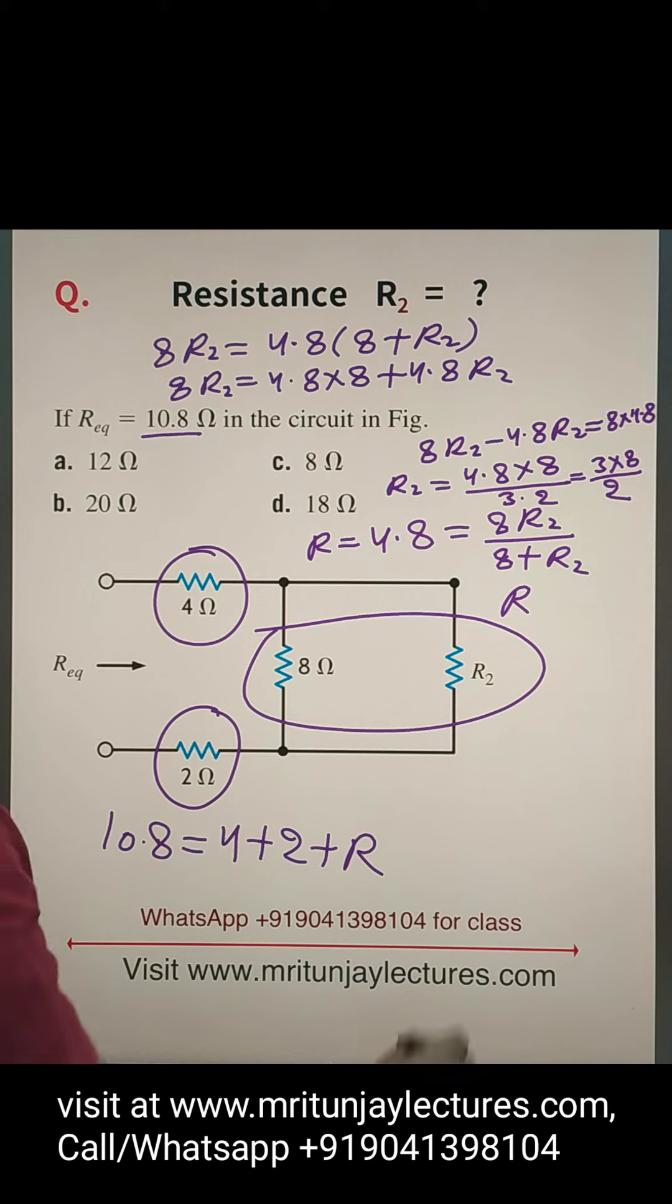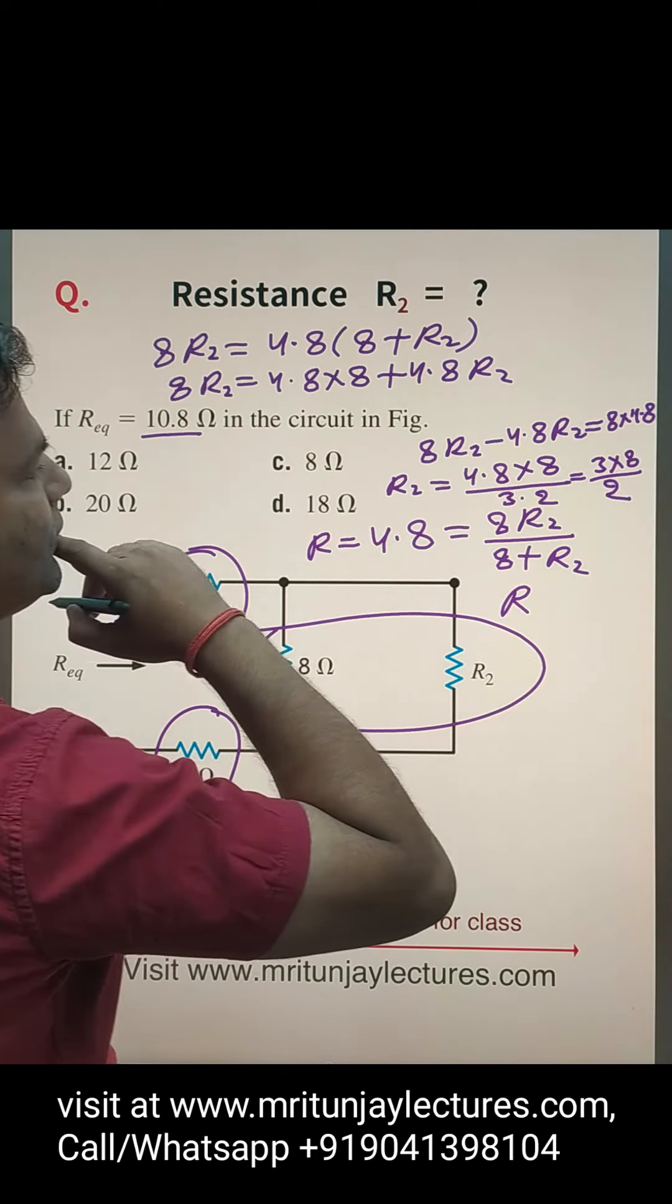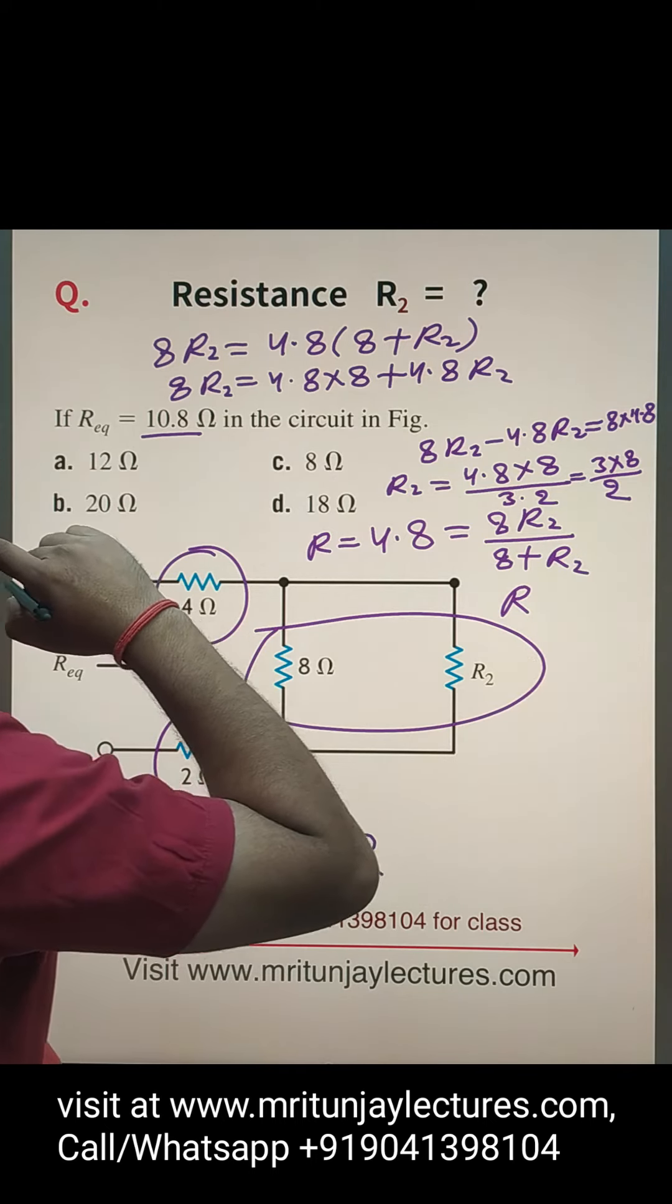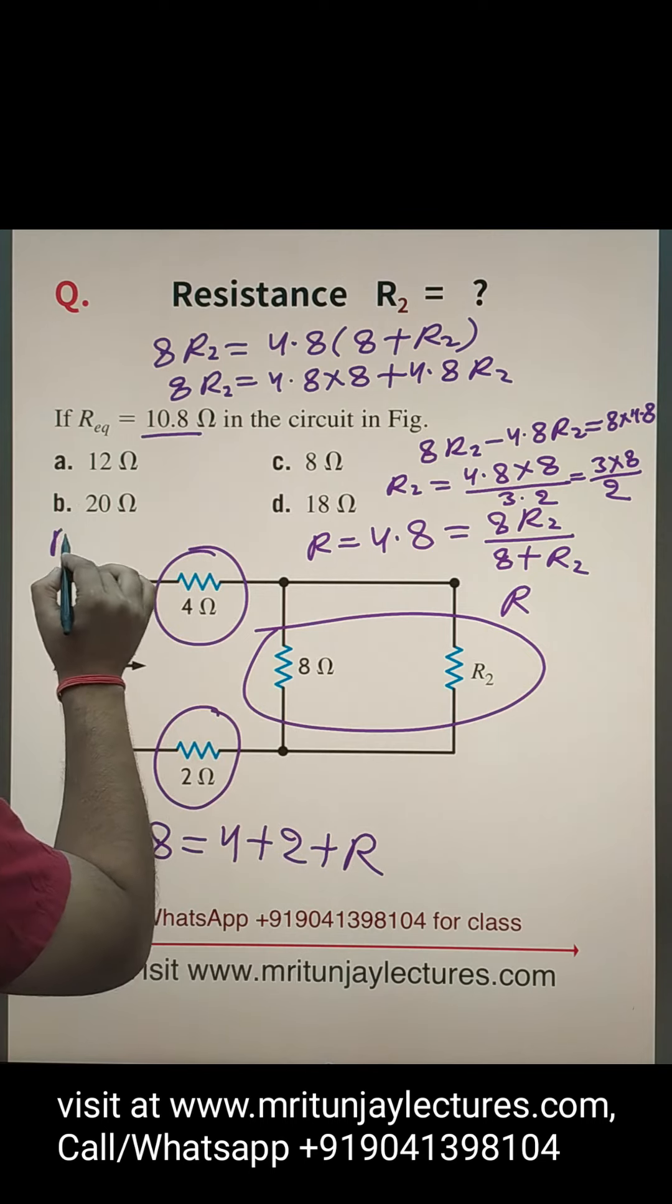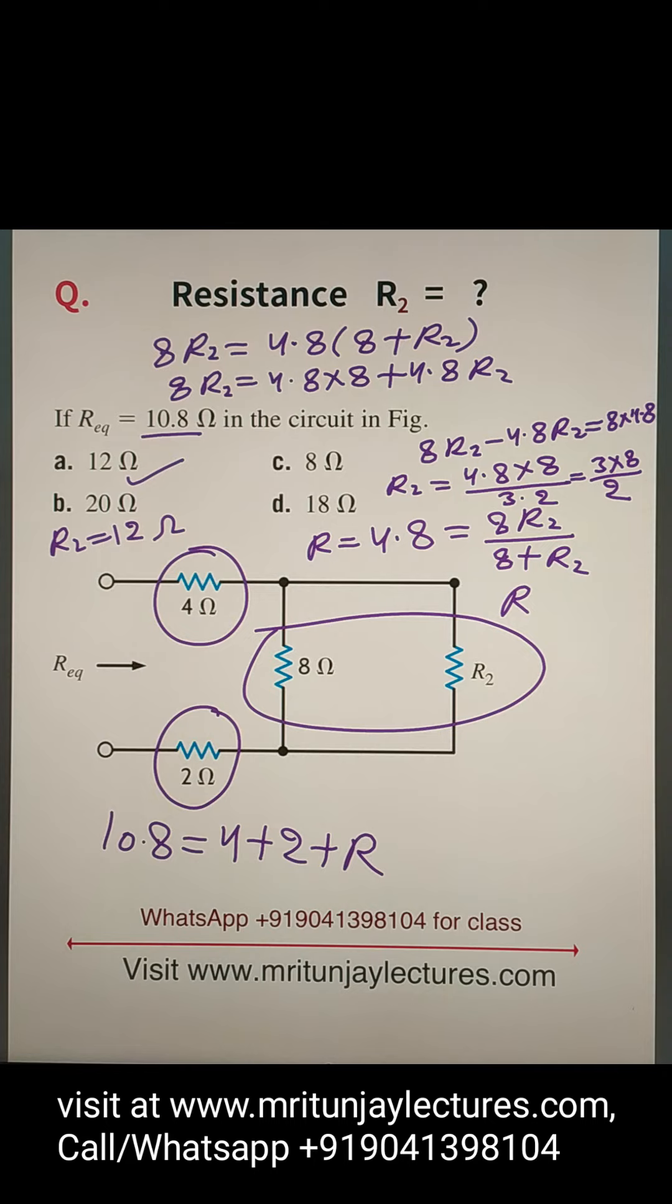4 into 3 that is 12. So R2 is how much? 12 ohms. So which option is correct? A option is the correct option. Mark it.